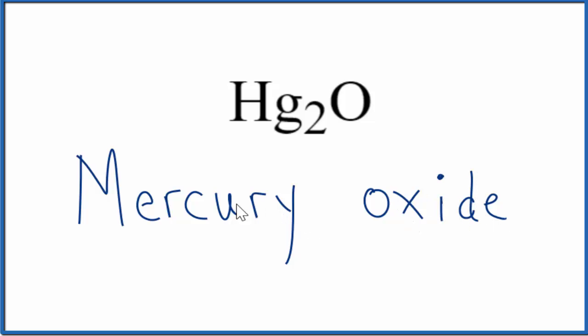So far, we have mercury oxide as the name for Hg2O. Remember, this is an ionic compound and we have a transition metal, so we're going to need to use Roman numerals to talk about the charge on the mercury atom here.